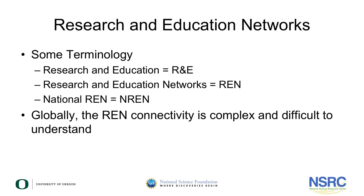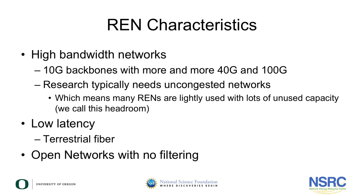Globally, the connectivity between RENs is quite complex. Research and education networks require different characteristics than the commercial internet. RENs are high speed and uncongested. They are low latency and typically operate as an open network with no filtering. Think about them as a dedicated superhighway system between universities and research institutes to speed that traffic, while the commercial internet runs on standard streets and highways with lots of traffic jams.